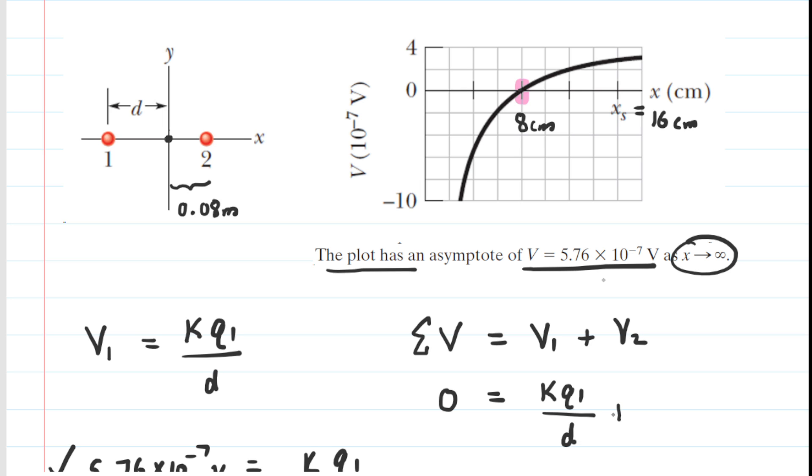And then we're going to add the potential produced by Q2. That's going to be K times Q2 over the distance, which we said was 0.08. So far, so good.